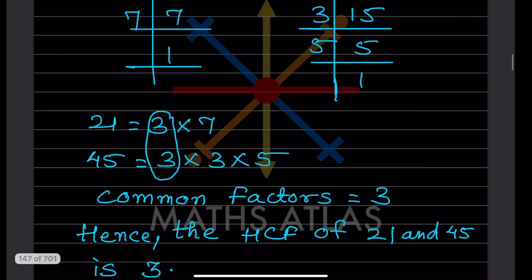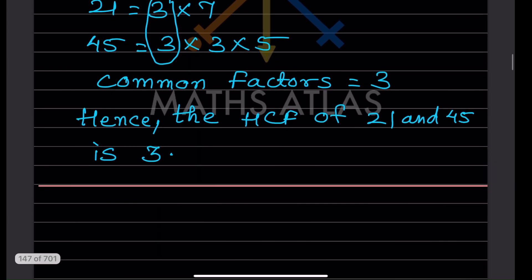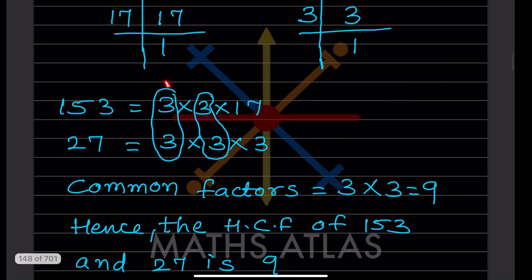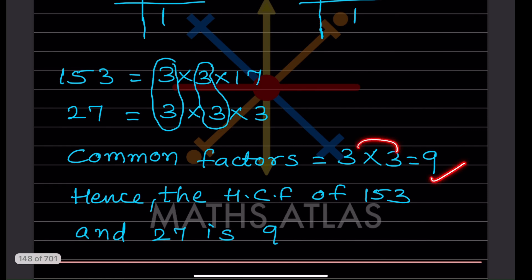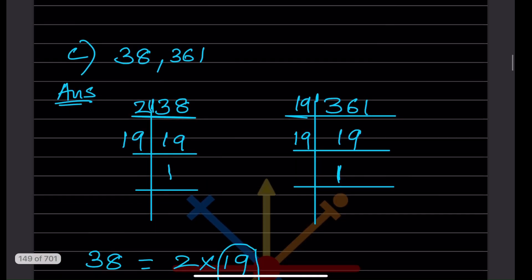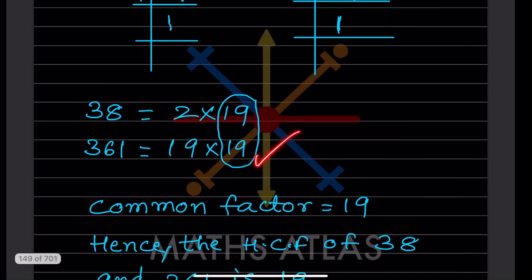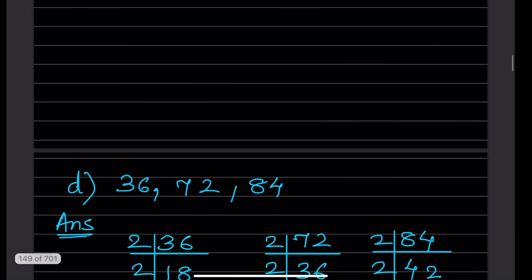With prime factorization, we look for the common prime factors. For this pair, the common factor is 3, so the HCF is 3. Note: in the listing method we look for the largest common factor number, while in prime factorization we look at what prime factors are common. For the next example, the common factors are 3 × 3 = 9, so the HCF is 9.